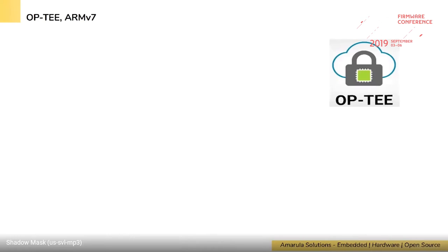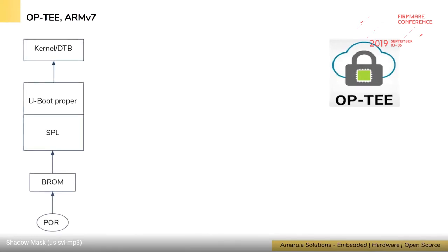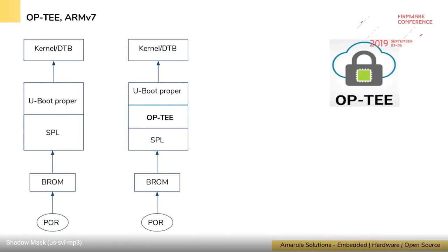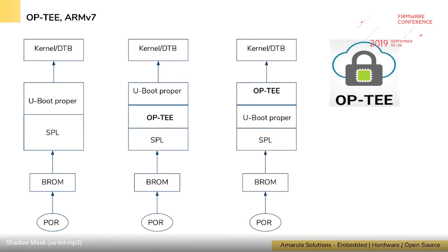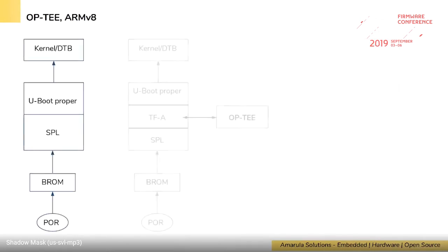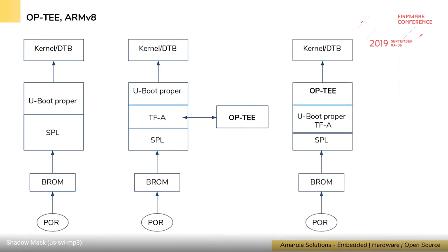There is one more bootloader stage sometimes required in the tertiary firmware area: OP-TEE (the Trusted OS). U-Boot also supports OP-TEE in two different chains. For ARMv7, OP-TEE sits between SPL and U-Boot, and you can load OP-TEE either after SPL or before the Linux kernel — two different use cases for loading the TrustZone trusted firmware OS.